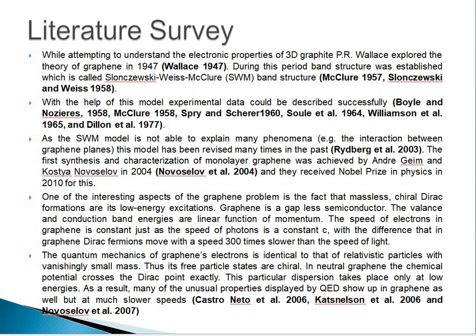However, the SWM structure was not able to explain the interaction between graphene planes. The first synthesis and characterization of monolayer graphene was achieved in 2004 by Novoselov and Geim, and this group also received the Nobel Prize in Physics in 2010 for this work. Another interesting aspect of the graphene problem is the massless chiral Dirac fermion formation, or its low energy excitations. Graphene is a gapless semiconductor. The speed of electrons in graphene is a constant, just as the speed of photons is a constant c, with the difference that graphene's Dirac fermions move at a speed 300 times slower than the speed of light.